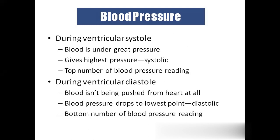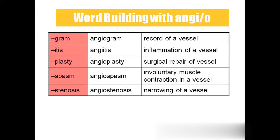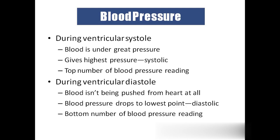We already know ventricular systole and ventricular diastole: systole is the highest recorded blood pressure and diastole is the lowest. Numerator is systole and denominator is diastole — 120 is the systole and 80 is the diastole.